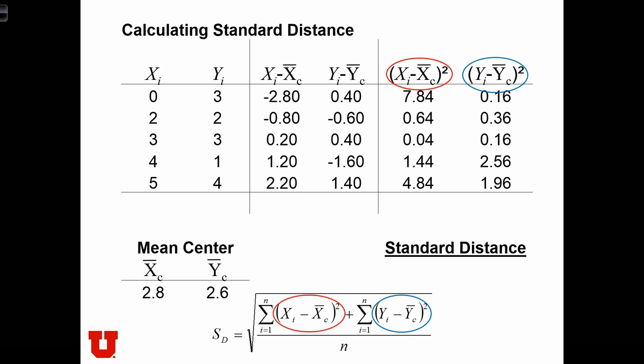So the next step is to find the sum of (xi minus x̄)². So here we have all of our (xi minus x̄)² values. We just need to add them up and find the sum. And similarly, we need to find the sum of the (yi minus ȳ)² values.